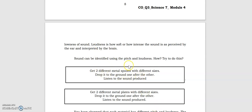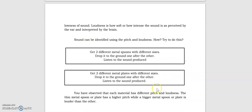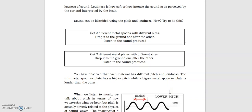Let's identify the pitch and loudness. How? Try this. First, you get two different metal spoons with different sizes. Drop it to the ground one after the other. Listen to the sound produced. You'll have high pitch. Get two different metal plates with different sizes. Drop it to the ground one after the other. Listen to the sound produced. Different sizes. They have different pitches and loudness. The thin metal spoon or plate has a higher pitch while a bigger metal spoon or plate is louder than the other.